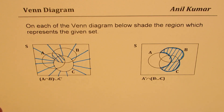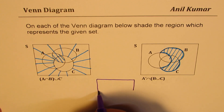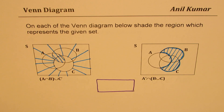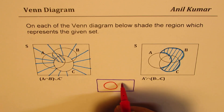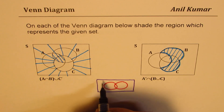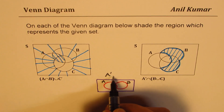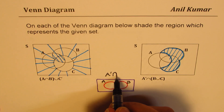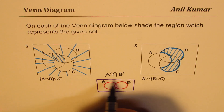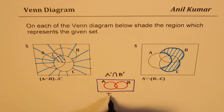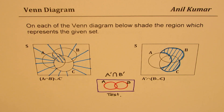Now let me give you a test question with only two sets in the Venn diagram, A and B. What you need to shade is the intersection of not A, B and not B. Feel free to write your comments and share your views. I hope the concept of shading Venn diagrams for given sets is absolutely clear. Thanks for watching and all the best.